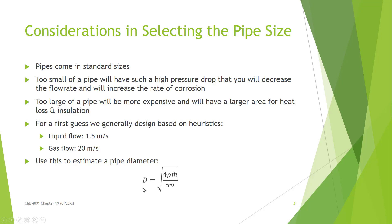Use these to estimate your pipe diameter. Volumetric flow rate equals mass flow rate times density, and it's also equal to velocity times area. We can use that relationship to solve for the diameter.